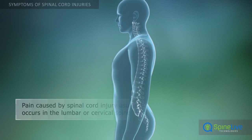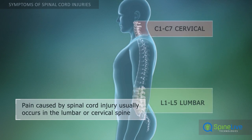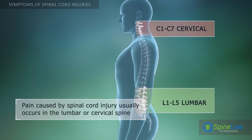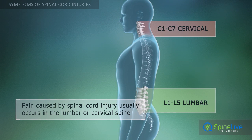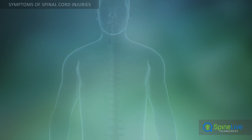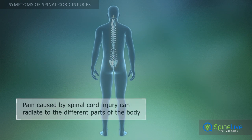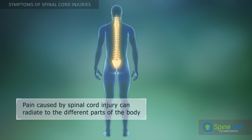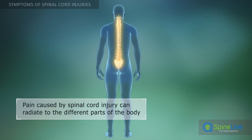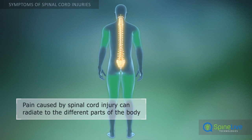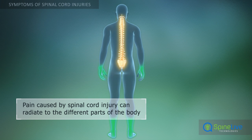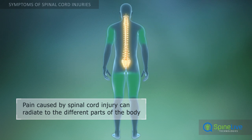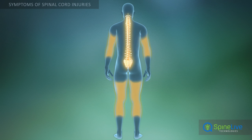Pain caused by spinal cord injury can occur anywhere in the spine, but spinal cord injuries are most common in the cervical and lumbar regions. If spinal cord injury causes irritation of nerve tissue, pain can radiate to different parts of the body. In most cases, it radiates to the legs and arms, and is accompanied by tingling, burning, numbness, or muscle cramps.